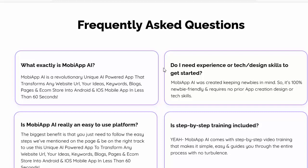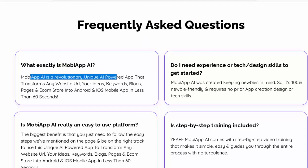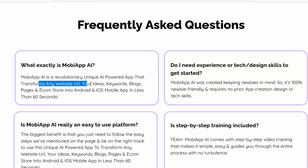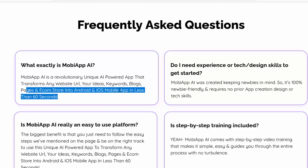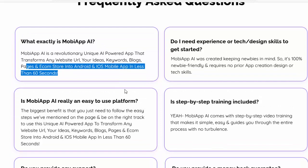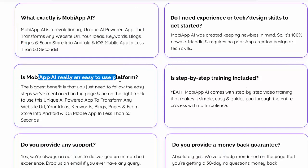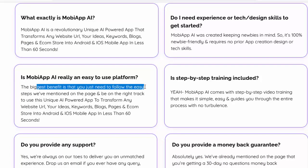Frequently asked questions. What exactly is MobiApp AI? MobiApp AI is a revolutionary unique AI-powered app that transforms any website URL, your ideas, keywords, blogs, pages, and e-com store into Android and iOS mobile app in less than 60 seconds. Do I need experience or tech design skills to get started? MobiApp AI was created keeping newbies in mind, so it's 100% newbie-friendly and requires no prior app creation, design, or tech skills.